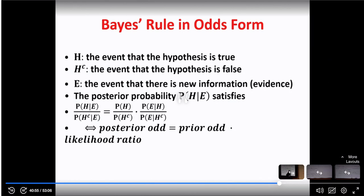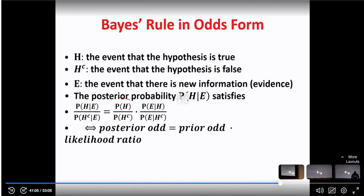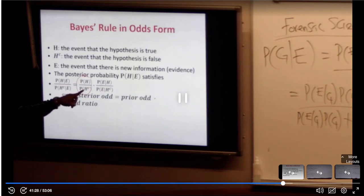Now if I want to talk about Bayes' rule in odds form, I'm going to talk about posterior odds, prior odds, and likelihood odds. The prior odds is the ratio of the probability that the hypothesis is true to the probability that it is not true. If this ratio is one, that is going to be 50/50. That is the prior odds.